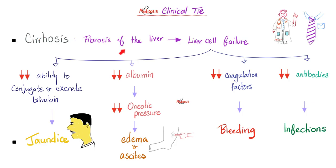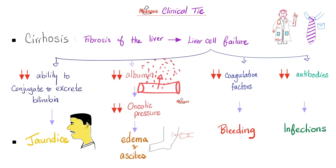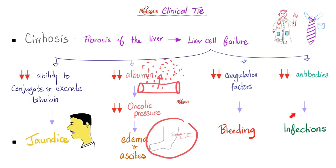Clinically, consider cirrhosis - fibrosis of the liver, an end-stage liver disease. If the liver has failed, it cannot conjugate and excrete bilirubin, so it ends up in your blood causing jaundice - yellowish discoloration of the skin, sclera, and mucous membranes. The liver cannot make albumin, so oncotic pressure drops; fluid keeps pushing out of vessels into the interstitial space, causing edema. In the belly, this is ascites - a common feature of cirrhosis. The liver cannot make coagulation factors, so you will bleed. It cannot make antibodies, leaving you at higher risk of infections.